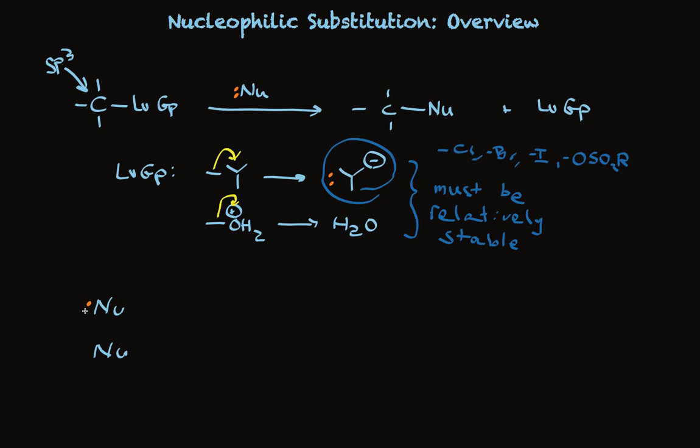The nucleophile must have a pair of electrons to share, often has a negative charge, but doesn't necessarily have a negative charge. If this guy doesn't have a negative charge, it probably is something that has a proton attached that can be lost.